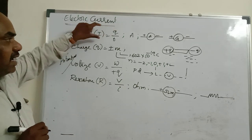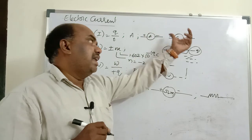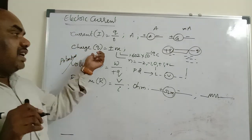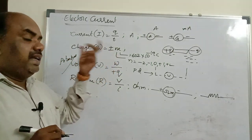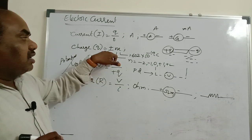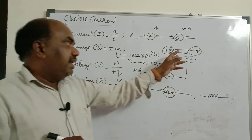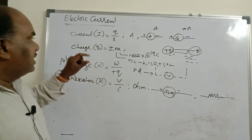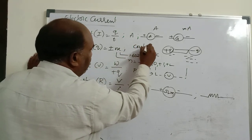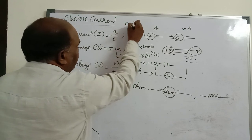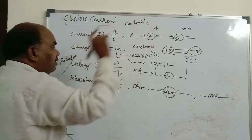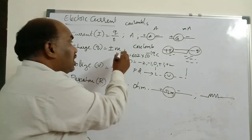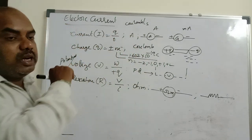Current is Q/T, unit ampere. Instruments: ammeter and galvanometer. Ammeter measures current in amperes; galvanometer in milliamperes. Charge is quantized — multiplied by any number of electrons. Charges are two types: positive and negative. Where fewer electrons are present is positive charge; where more electrons are present is negative charge. Charge SI unit is coulomb. Current unit can also be written as coulomb per second, but SI unit is ampere. One electron charge: 1.602 × 10⁻¹⁹ coulombs.